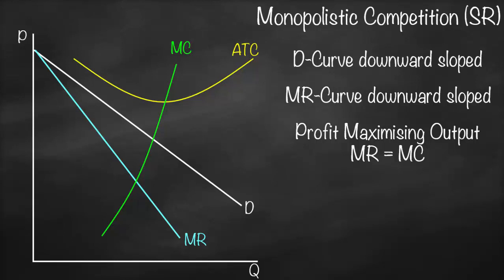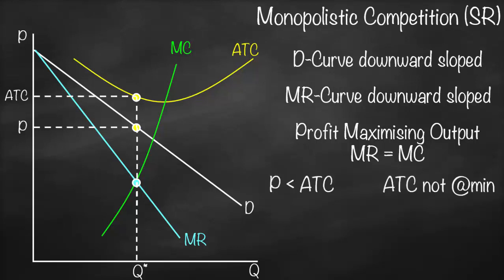The profit-maximizing condition is marginal revenue equals marginal cost — the blue and green lines respectively. From their intersection, we go down to find Q*, then up to the demand curve and horizontally to get price. Going up again to the average total cost curve, we find that price is lower than average total cost, and average total cost is not at its minimum. Since price is less than average total cost, profit is less than zero — we have a loss, shown by the orange shaded area.